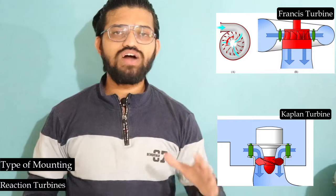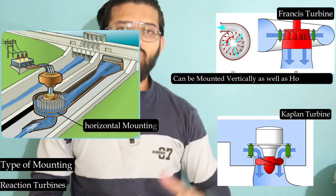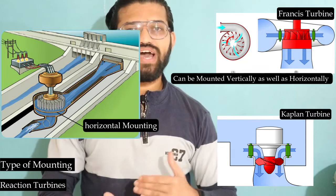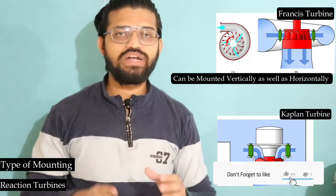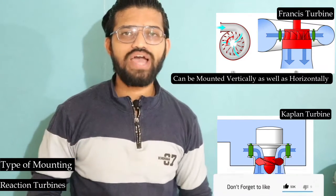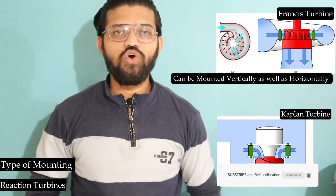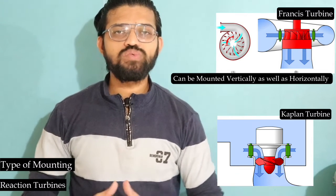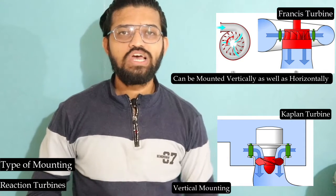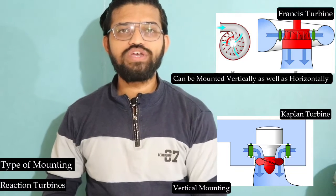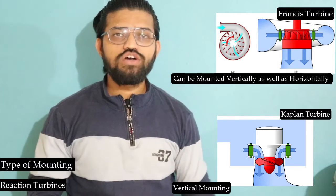Regarding the type of mounting, the Francis turbine can be mounted both horizontally and vertically, giving more flexibility. However, the Kaplan turbine does not have this flexibility — it must be installed vertically, with the axis of rotation being vertical.